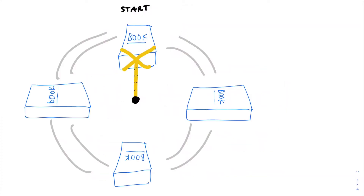To get started, I want to show three examples that may seem similar at first, but are actually drastically different. So first, here we have a book with a rope tied to it that you're grabbing onto. You spin this book on the rope around you in a circle. Let's say we start here, then spin it in a circle at constant speed the whole time.